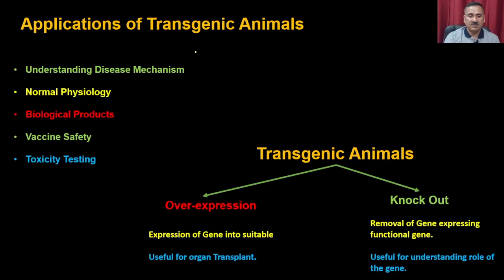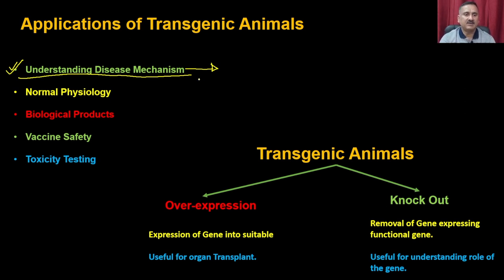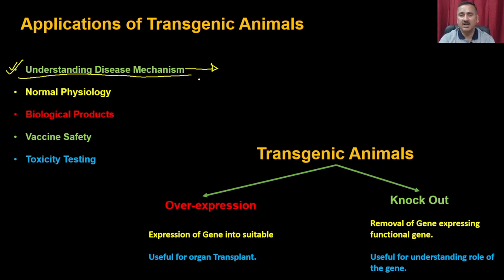The application of transgenic animals is that they are used for understanding a particular disease mechanism. For example, if a cancer is being developed because a particular transcription factor is over-expressed in large quantity, you can over-express that transcription factor into an animal, and that animal will eventually develop cancers of the breast, pituitary, or other organs. This can be used to study how cancer develops and also to explore anti-cancer drugs.